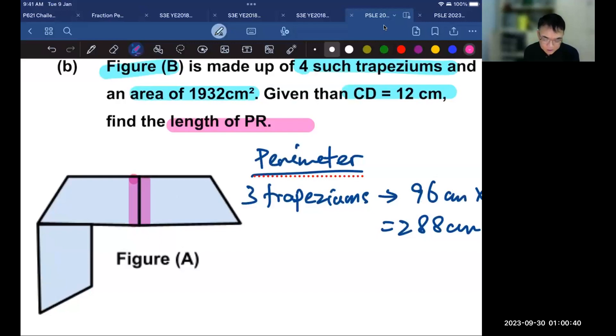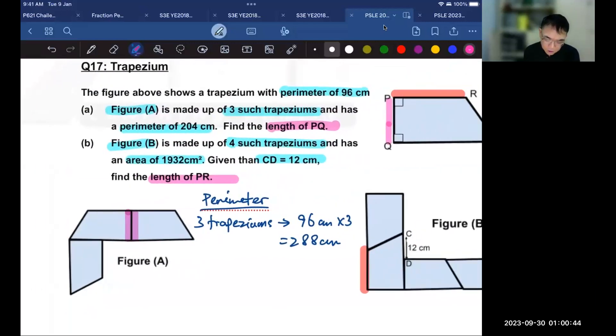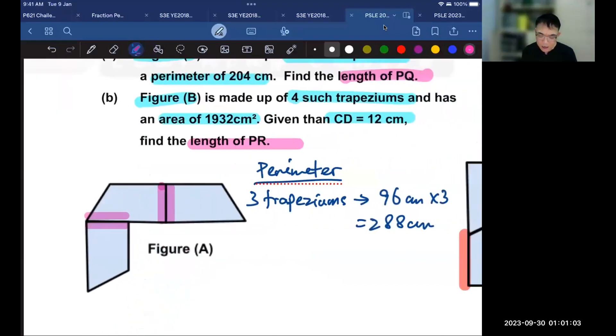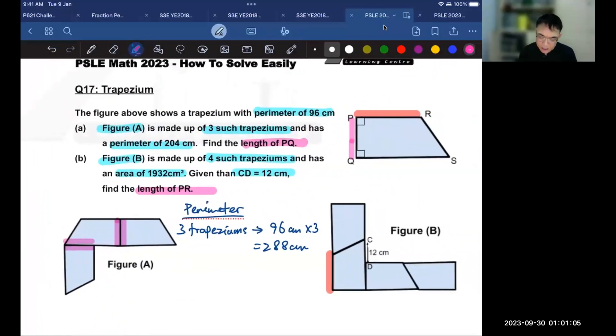There are two more lines that are inside, which is not included in 204. This represents one of the lines. And for this trapezium, there is another line here. So in total, you can see that there are four pink lines. These four pink lines are equal, and they are all equal to PQ.